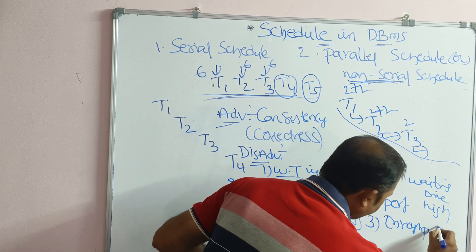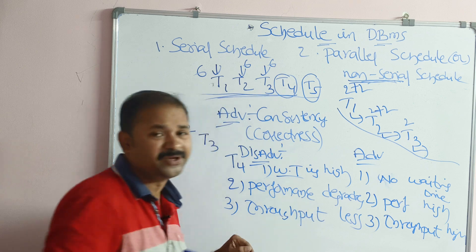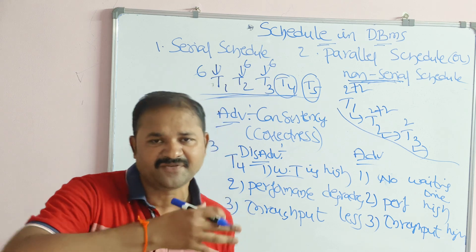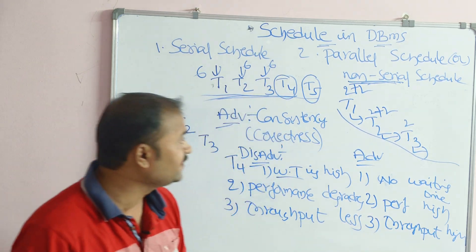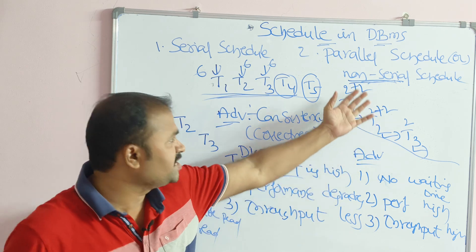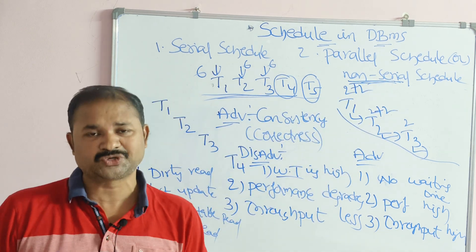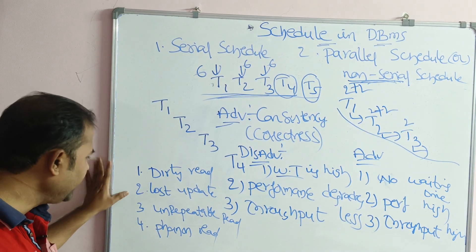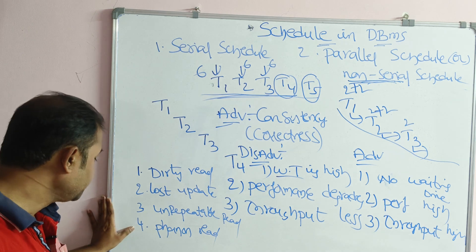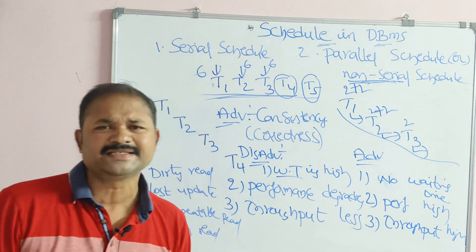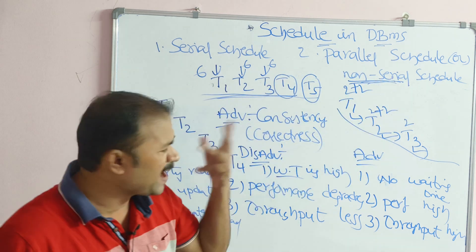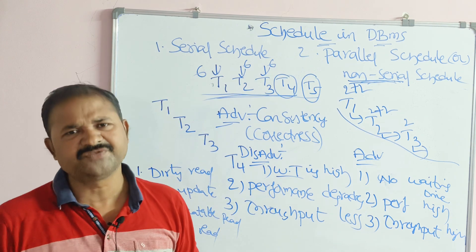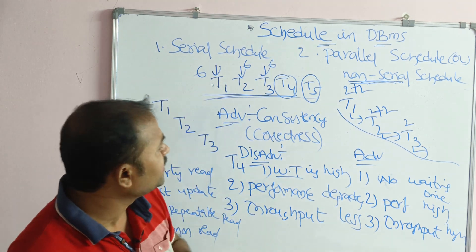Throughput means number of transactions executed per time unit, and here we can execute more transactions in a faster manner. However, while executing transactions concurrently, there are some disadvantages such as dirty read, lost update, unrepeatable read, and phantom read. We will discuss all these disadvantages of parallel schedule and the drawbacks of concurrent execution in the next video.